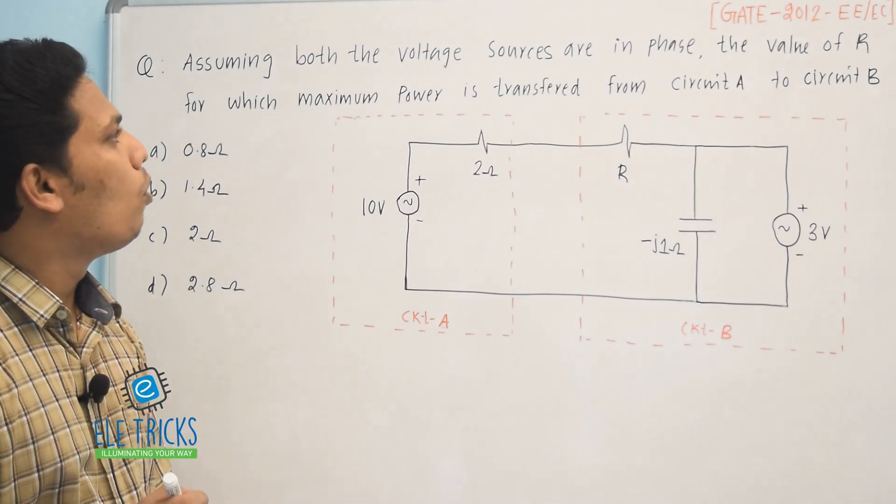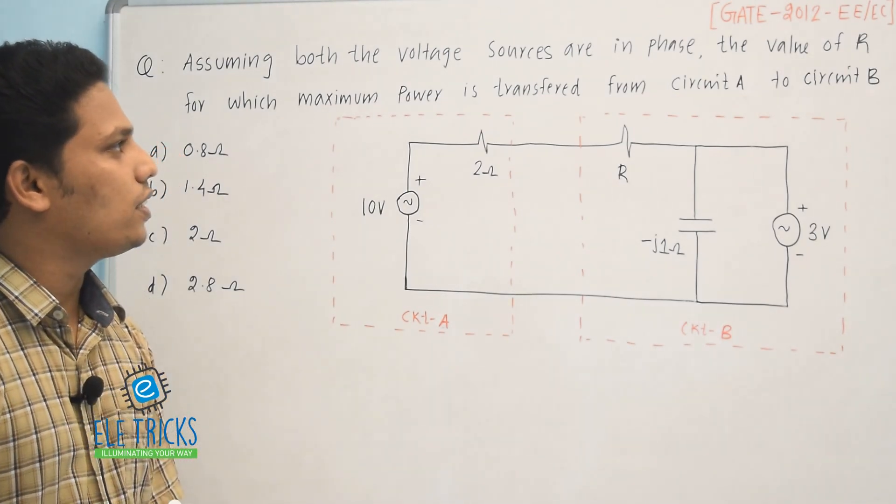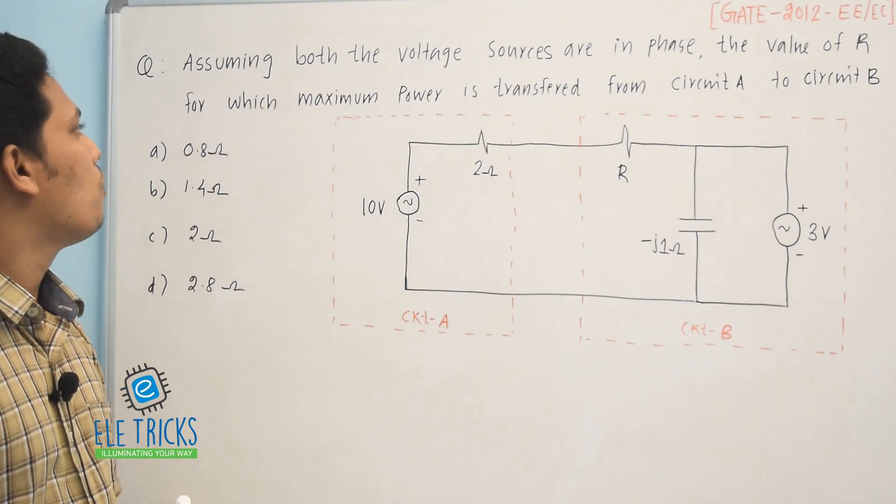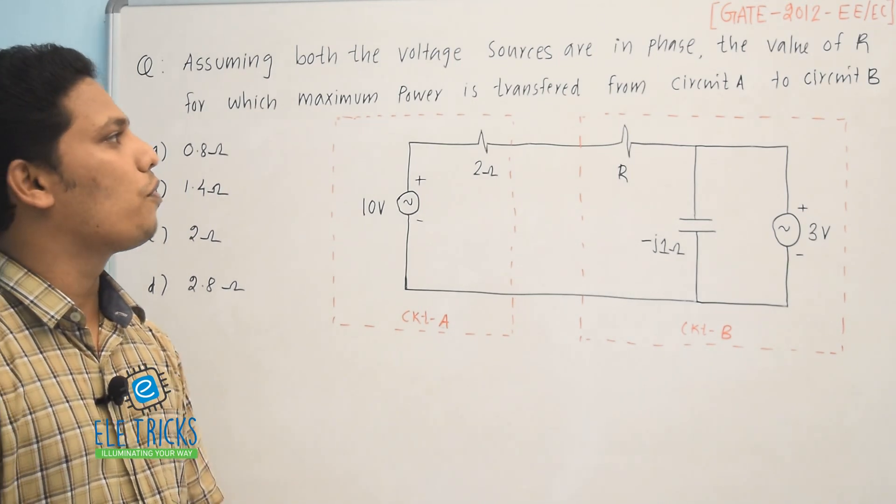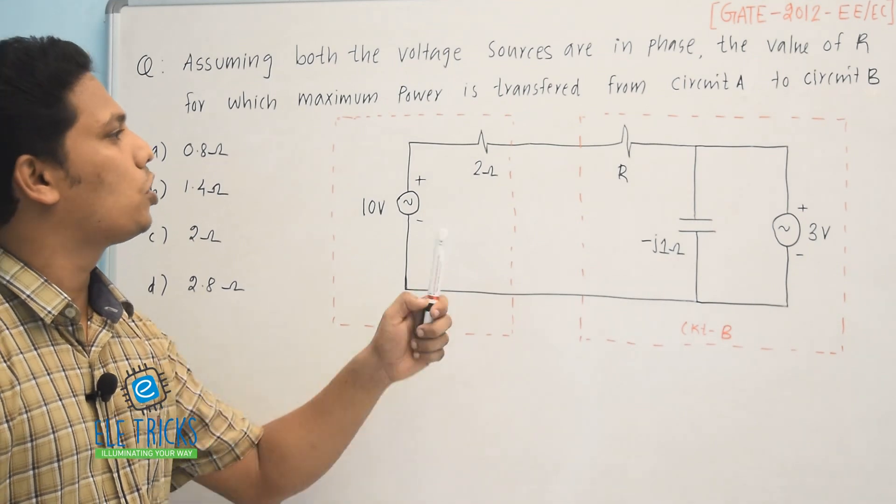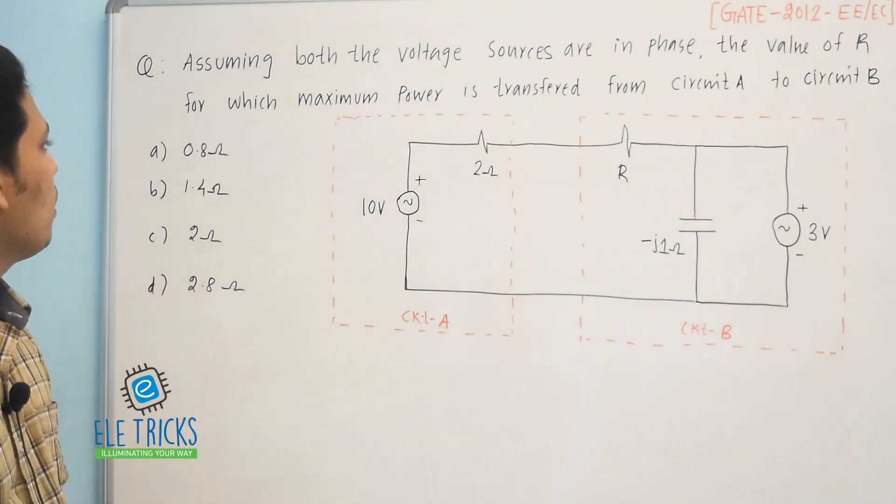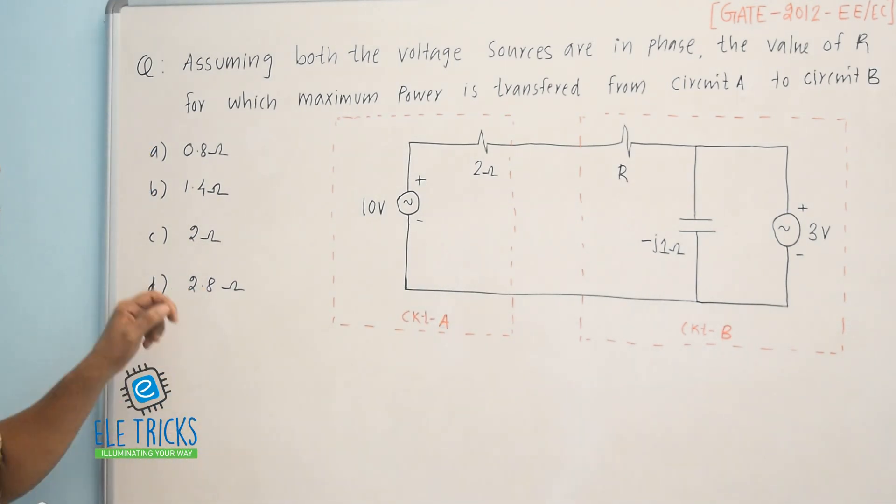Assuming both the voltages are in phase, the value of R for which the maximum power is transferred from circuit A to circuit B. The options are: A. 0.8 ohm, B. 1.4 ohm, C. 2 ohm, D. 2.8 ohm.